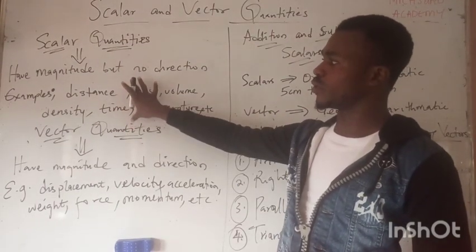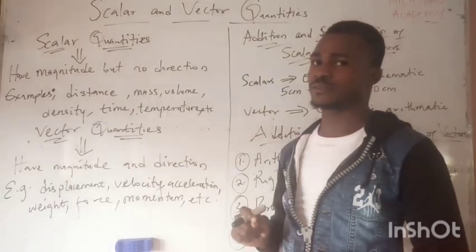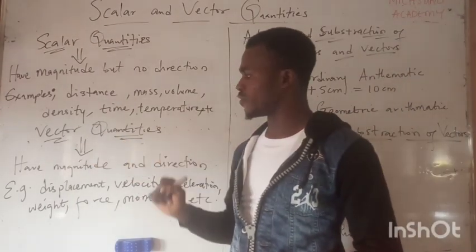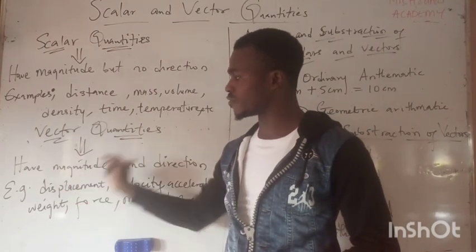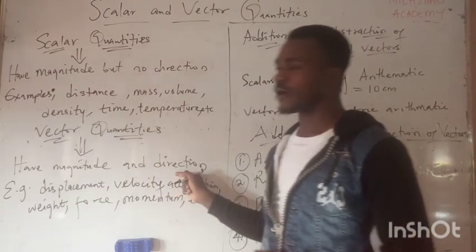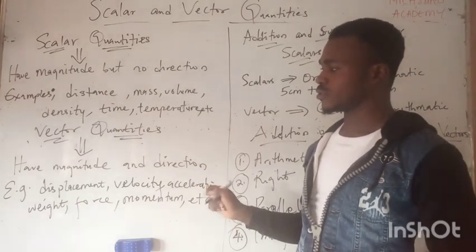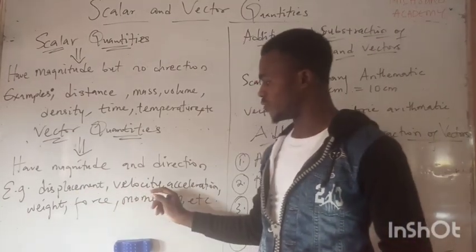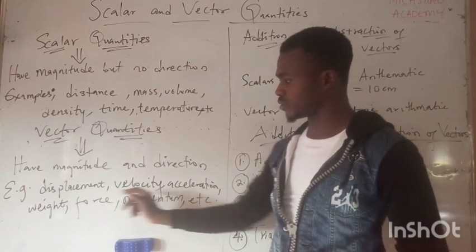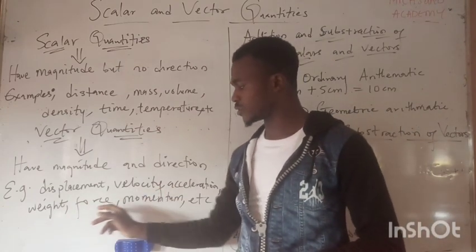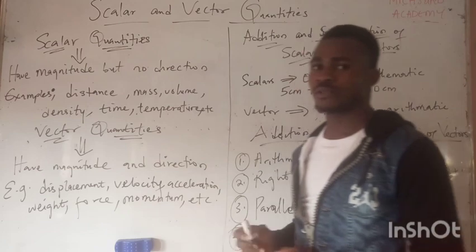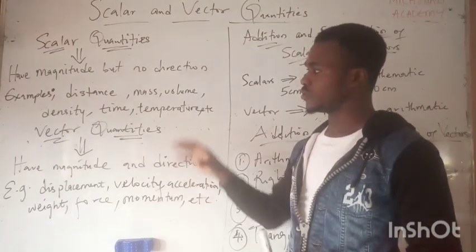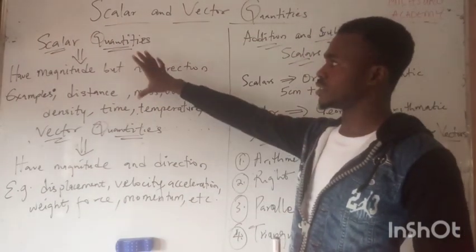Scalar quantities have magnitude but they don't have direction. For vector quantities, these are quantities that have both magnitude and direction. Examples include displacement, velocity, acceleration, weight, force, and momentum.